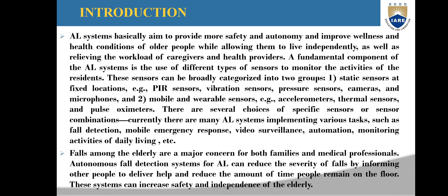Introduction: AAL systems basically aim to provide more safety and autonomy, and improve wellness and health conditions of older people while allowing them to live independently, as well as relieving the workload of caregivers and health providers. A fundamental component of the AAL system is the use of different types of sensors to monitor the activities of residents. These sensors can be broadly categorized into two groups: static sensors at fixed locations, e.g. PIR sensors, vibration sensors, pressure sensors, cameras and microphones; and mobile and wearable sensors, e.g. accelerometers, thermal sensors and pulse oximeters.